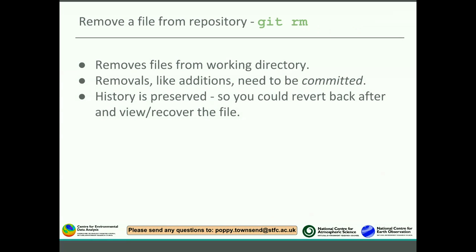To delete a file, use git rm — that removes files from a working directory. Removals, like additions, need to be committed, so you'll still need to do git add and git commit. History is preserved, so if you've deleted a file, you can go back to a previous commit and that file will still be there.